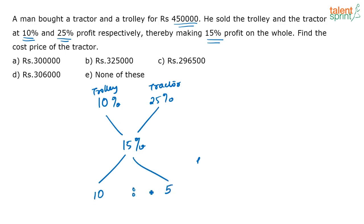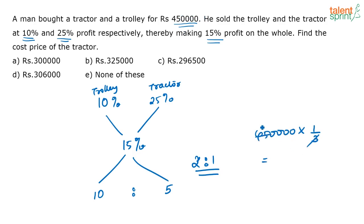So the ratio of prices between the two articles is 2:1. The total cost price is 4 lakh 50,000. Therefore, the cost price of the tractor is 4,50,000 × (1/3) = 1 lakh 50,000. So the correct answer is option E, none of these.